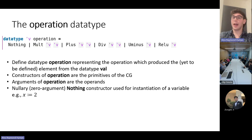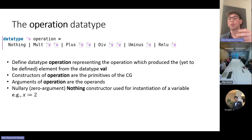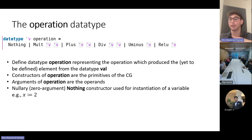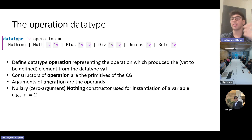I can now move on to my implementation, starting with how we defined the value class. As is common in many functional programming languages, the idea of a class in an OOP sense doesn't exist. However, the Value class in Karpathy's micrograd can be closely mimicked using Isabelle's algebraic data types. First we define a data type called Operation in Isabelle, which represents the mathematical operation producing elements from the data type VAL. The constructors — Nothing, Mult, Plus, Div, UMinus, ReLU — are all the primitives that can be used to build the computation graph. Nothing just represents when the programmer wishes to instantiate a variable, for example, let x equal 2.